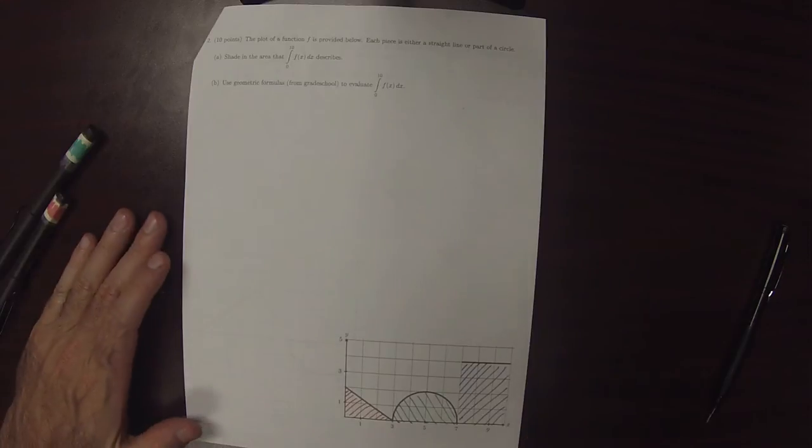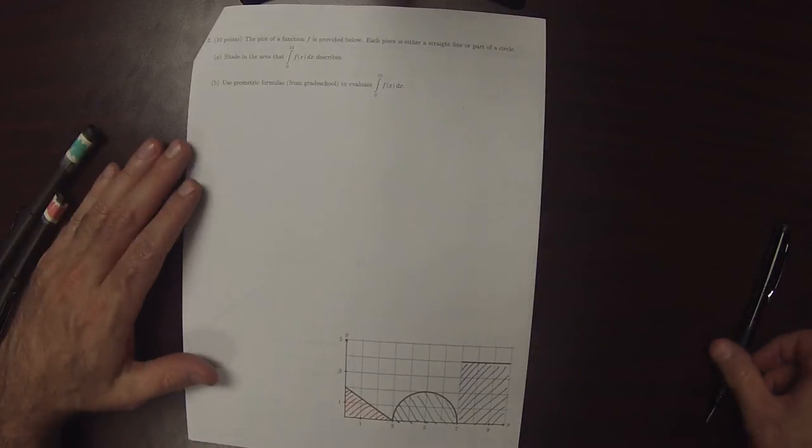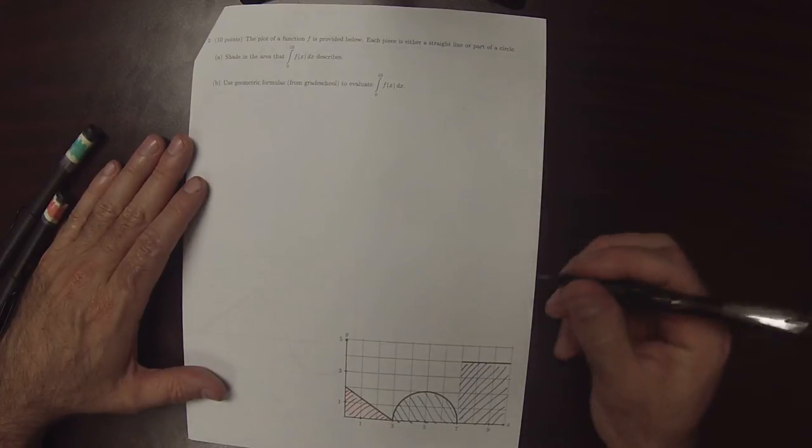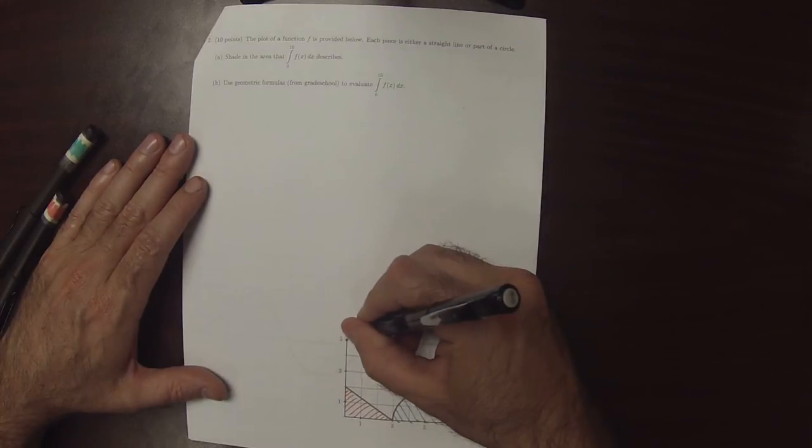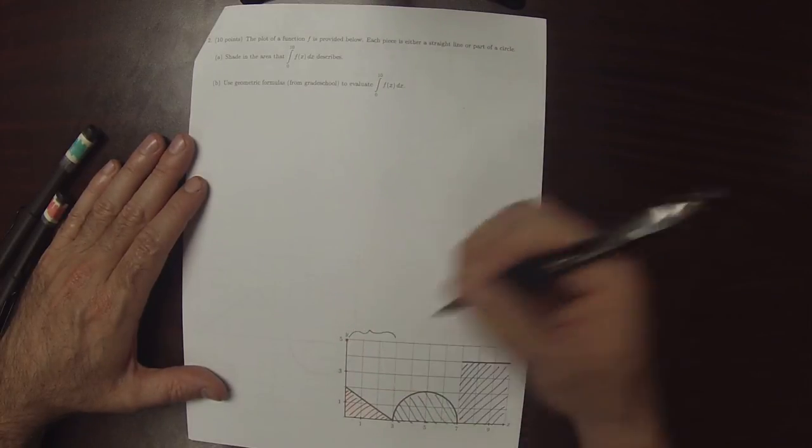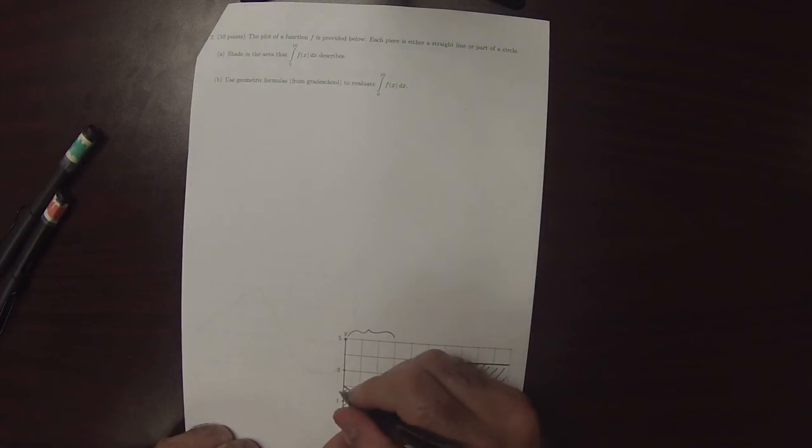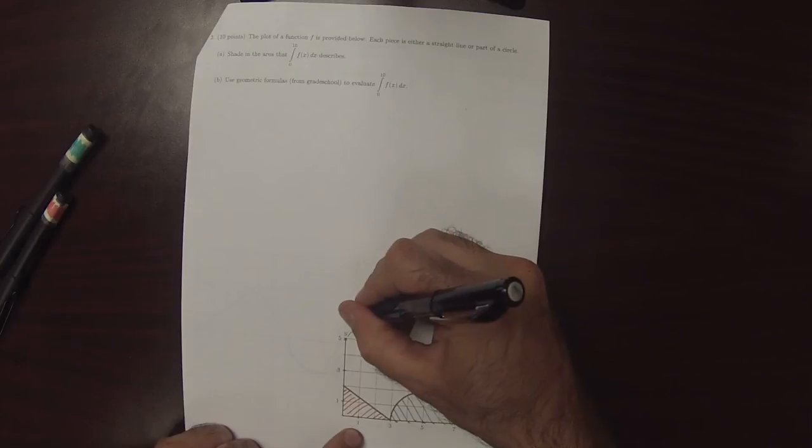So, shading that in correctly is the answer to part A. And then the answer to part B is that using our grade school formulas, we can find the area of each one of these shapes. So, as for this triangle, base times height over 2. So, that's 3 times 2 over 2. Well, that's 3.